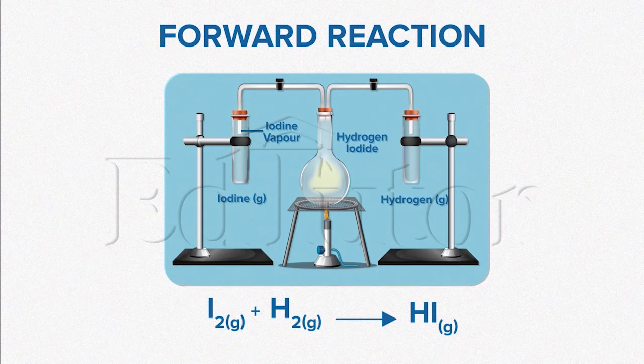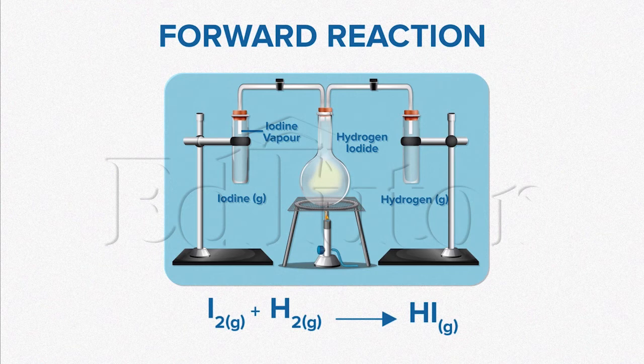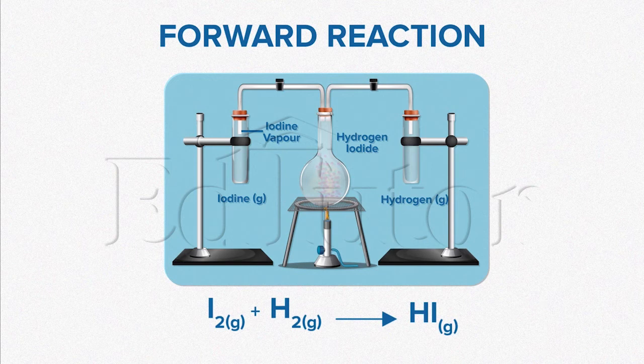On the other hand, once hydrogen iodide is heated in a closed flask, we will see a purple color begin to appear. This shows the formation of iodine vapor.